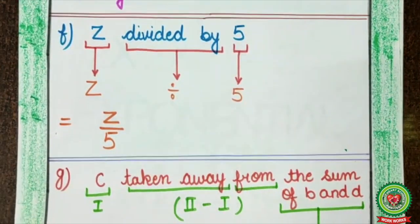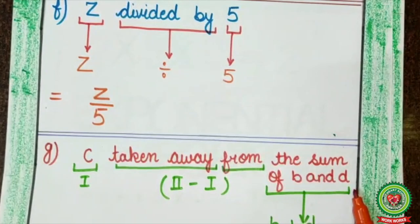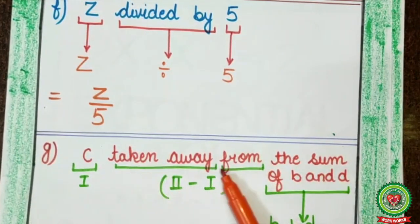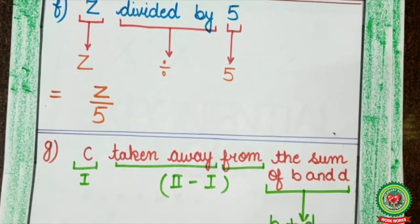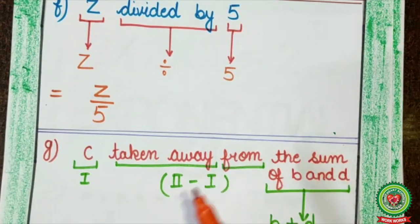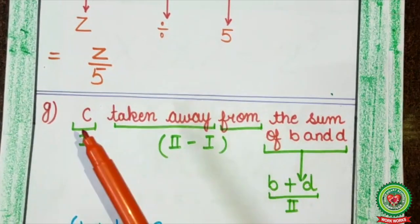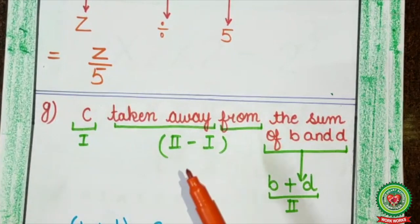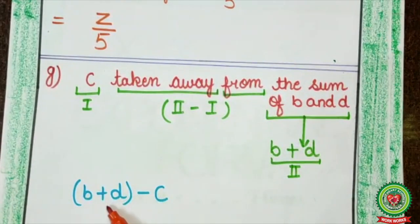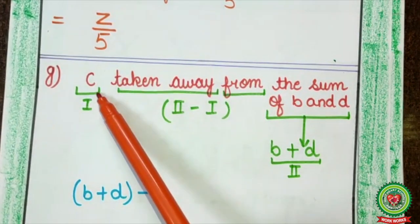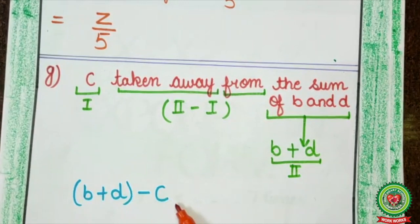Now, next example: C taken away from the sum of B and D. Now, 'taken away from' means second number minus first number. Here, the second number is the sum of B and D, that means B plus D. And the first number is C. So, when you do second number minus first number, you put B plus D in bracket, then minus, and the first number is C. So, here it comes: B plus D minus C.